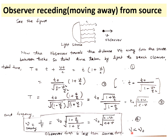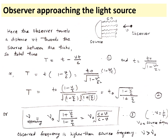In this receding case, ν will always be less than ν₀ — the frequency observed by the observer will be less than the source frequency. Similarly, we can find the case where the observer is approaching the source: the source has frequency ν₀ and we want to find the frequency observed by the observer moving with velocity v towards the source.